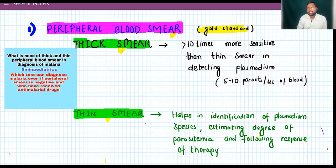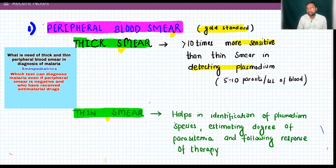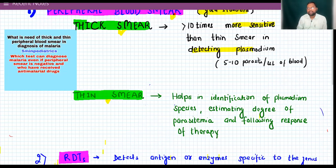Thick smear is 10 times more sensitive than thin smear and it helps in detecting plasmodium. A skilled microbiologist can detect even 5 to 10 parasites per microliter of blood.